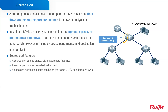About the source port, it can be a layer 2, layer 3, or even an aggregate interface. A source port cannot be a destination port. Source and destination ports can be on the same VLAN or different VLANs.